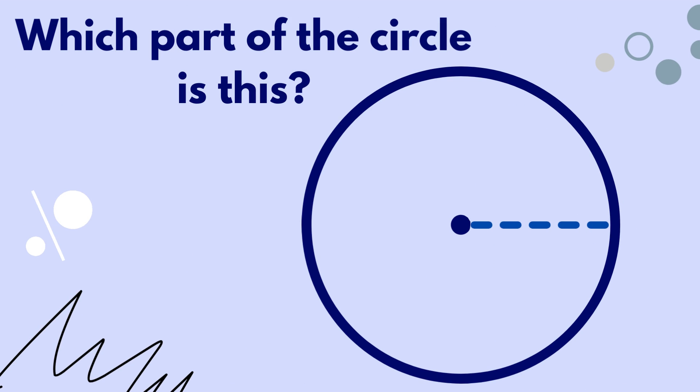Which part of the circle is this? It's the distance between the midpoint of the circle to any point on the edge of the circle. Yes, radius. Very well done.